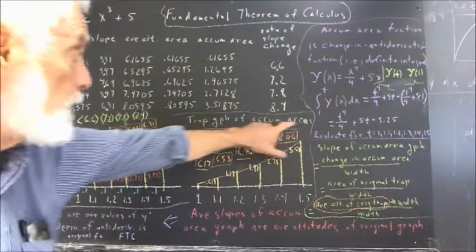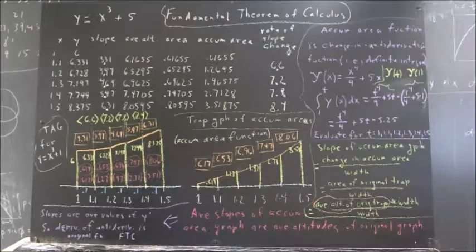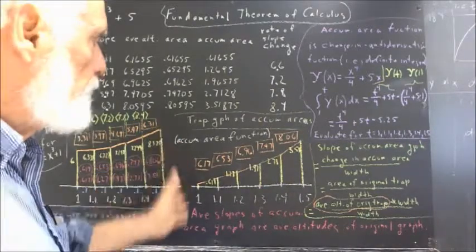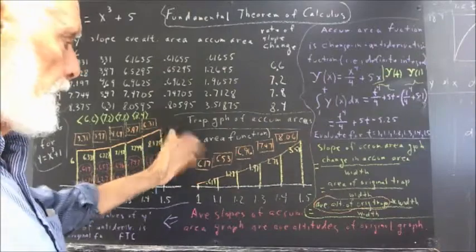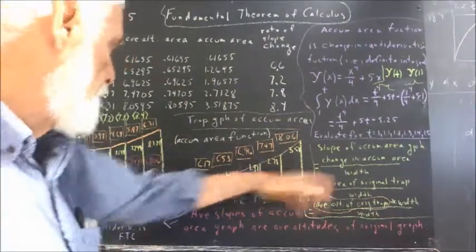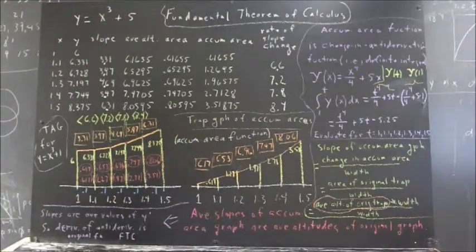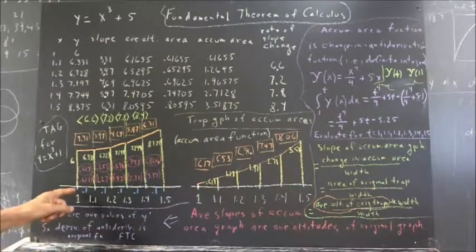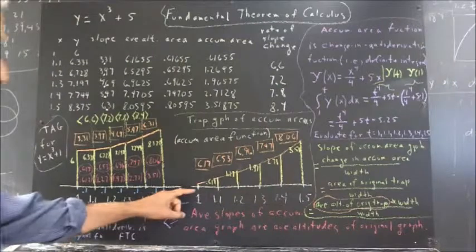Now, next thing we do, we do the trapezoidal approximation graph of the accumulated areas. Meaning that the altitudes become the accumulated areas and our x values or horizontal axis values remain the same as they were. Now up to x equals 1 we accumulated no area.